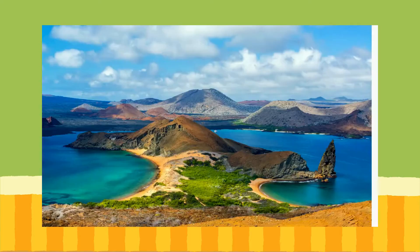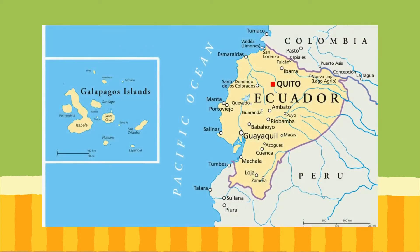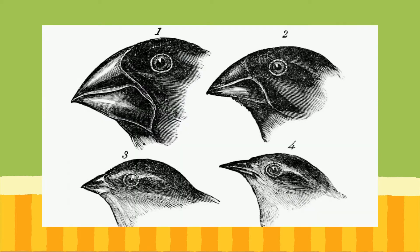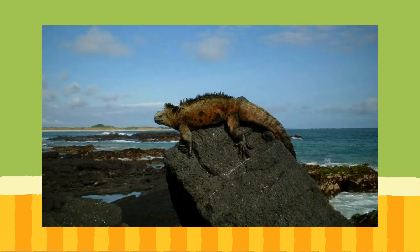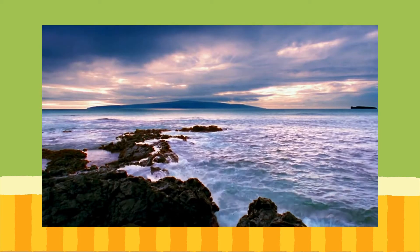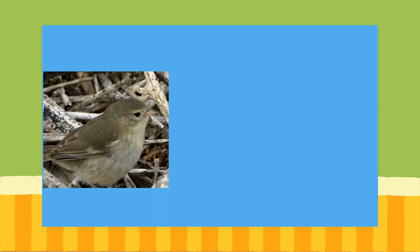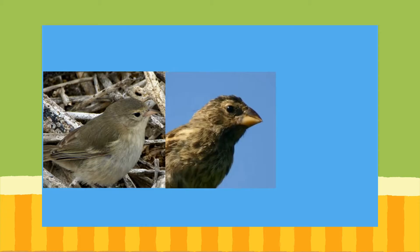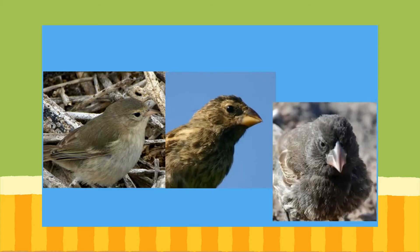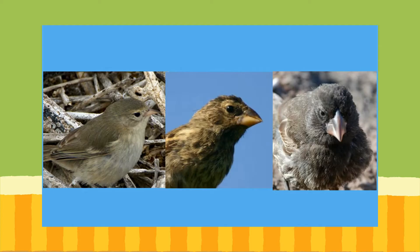Let's look at another example. The Galapagos Islands are located 605 miles to the west of South America. There are several different types of finches that live on the islands. Their habitat is the Galapagos Islands, and the different finches have their own niches. The warbler finch has a thin beak for eating insects. A ground finch has a short beak for eating seeds left on the ground. Cactus finches eat cacti seeds. Each finch has its own niche that allows them to survive and prosper in the same habitat.